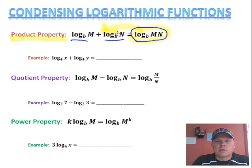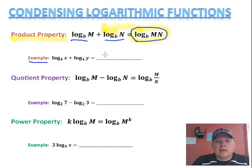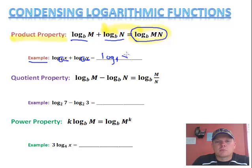So the log base b of m plus log base b of n equals the log base b of m times n. Let's look at this example: log base 4 of x plus log base 4 of y. We see that they're both log base 4, so I can go ahead and combine these together. I'm going to make it log base 4, and the rule says when you're adding those logs, you multiply that x and that y — so I just make it x times y. Pretty simple.